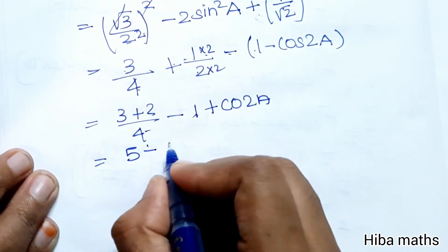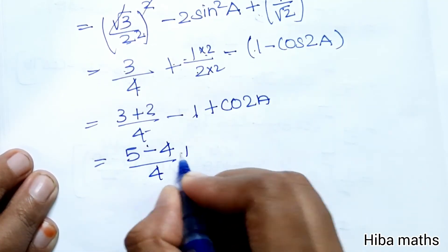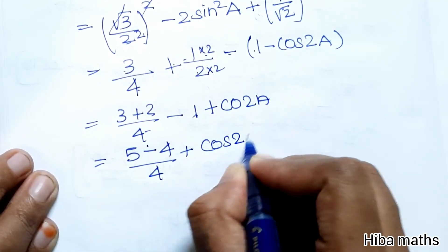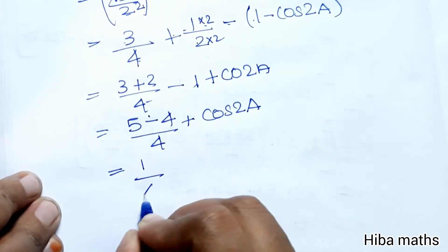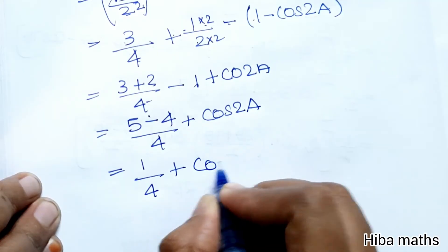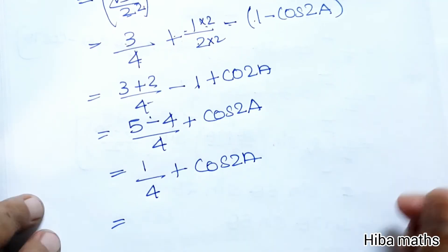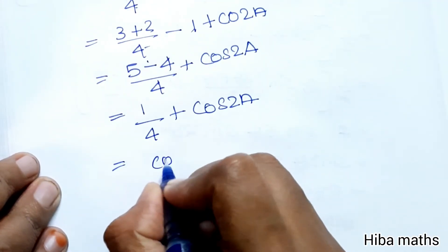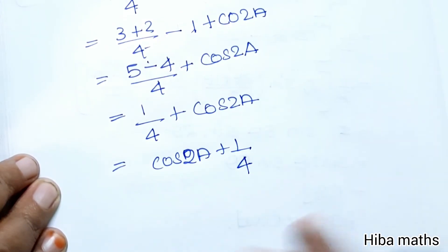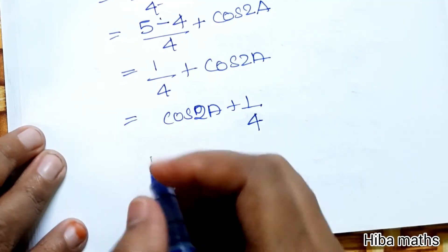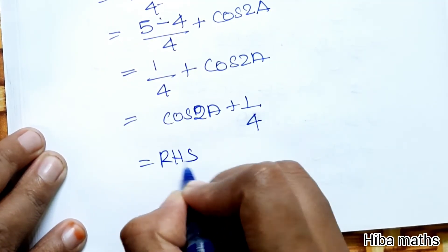Which is equal to 5/4 - 4/4 + cos(2A) = 1/4 + cos(2A). This can be rearranged as cos(2A) + 1/4, which is equal to RHS.